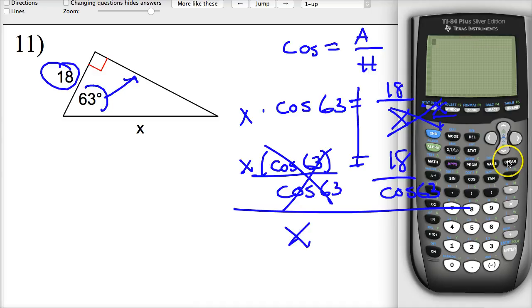The more you do this type, you'll start to get a feel for if the variable's on the bottom, you just take the numerator and divide by the cosine or whatever the ratio happens to be. 18 divided by cosine of 63, 39. Let's talk about whether this is a reasonable answer or not. This is the smallest side and it's 18. This is much bigger and it's 39. That's a reasonable answer.